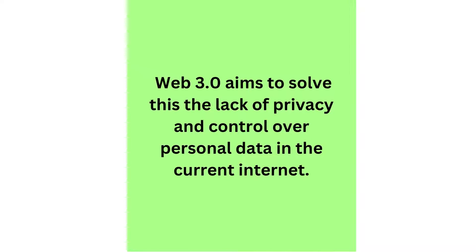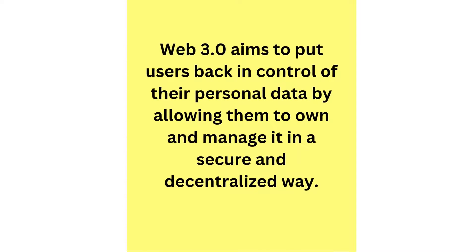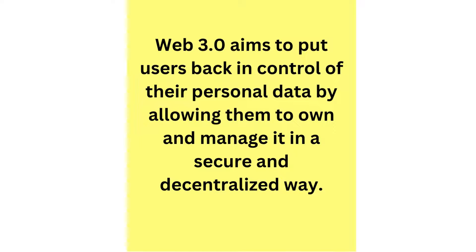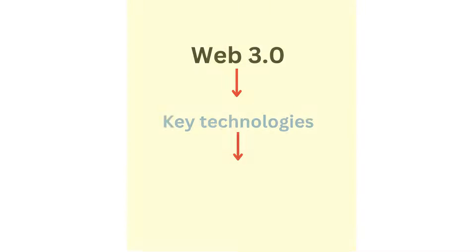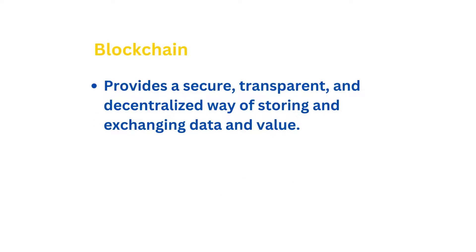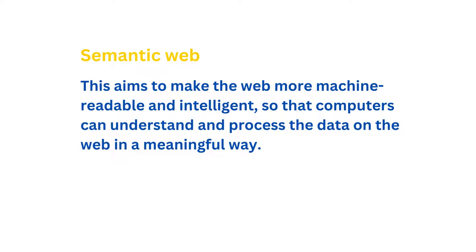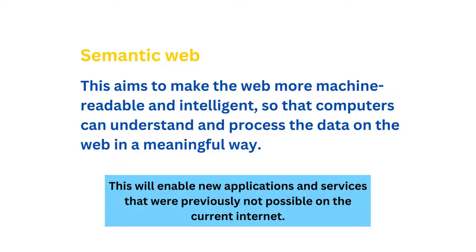Web 3.0 aims to solve this problem — the lack of privacy and control over personal data in the current internet. Web 3.0 aims to put users back in control of their personal data by allowing them to own and manage it in a secure and decentralized way. One of the key technologies behind Web 3.0 is blockchain. Blockchain provides a secure, transparent, and decentralized way of storing and exchanging data and value. With blockchain, data is stored on a distributed ledger, making it virtually impossible to manipulate or tamper with. Another defining feature of Web 3.0 is the semantic web, which aims to make the web more machine-readable and intelligent, so that computers can understand and process data in a meaningful way. This will enable new applications and services that were previously not possible on the current internet.